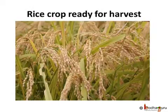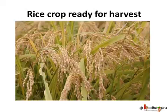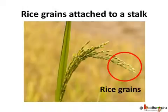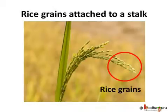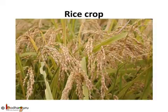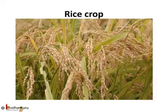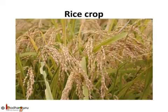When the crop is ready, the farmer reaps the harvest — that is, it is cut. But the rice grain is still attached to the stalk. We can't eat rice with stalks, so the grain has to be separated from the stalk. As we see, each stalk has many grain seeds attached to it. Imagine the number of grain seeds in hundreds of bundles of stalks lying in the field.